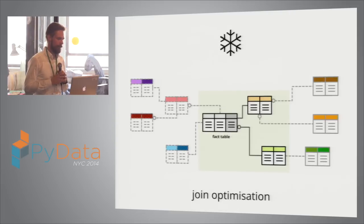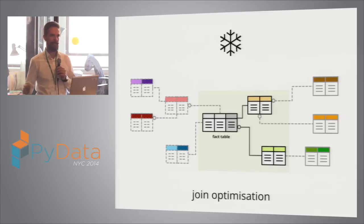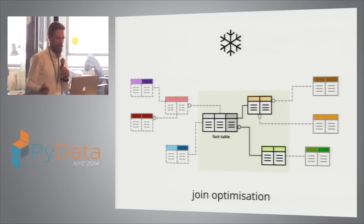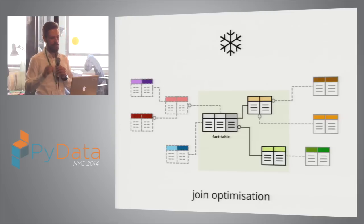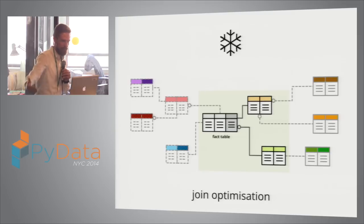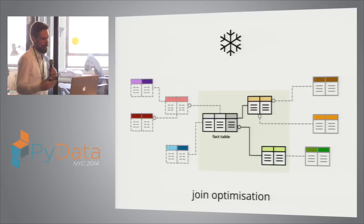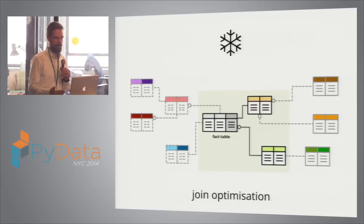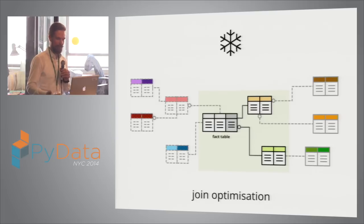If you are querying a really big snowflake schema, Cubes does not denormalize the whole snowflake schema and then apply your drill-downs or cell conditions. It figures out which attributes from which tables are being used for that particular query, and it joins only the tables that are necessary. The less joins you have, the faster you get your answer. So it analyzes the query, selects the tables, and creates the joins.